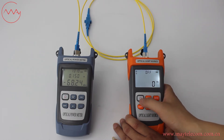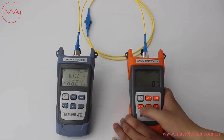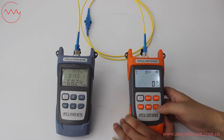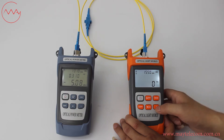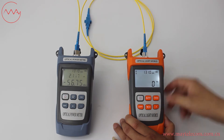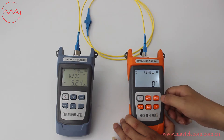The auto-off time is 10 minutes. Press the light button to turn on or turn off the backlight. Press the wavelength button to select wavelength — 1310 or 1550 nm. Press the modulation button to select frequency.